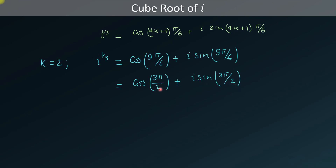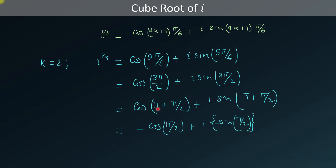We can write 3π/2 as π + π/2. From this, cosine(π + π/2) = −cosine(π/2) and sine(π + π/2) = −sine(π/2). Since cosine(π/2) = 0 and sine(π/2) = 1, we get 0 − i, which finally gives us negative iota.